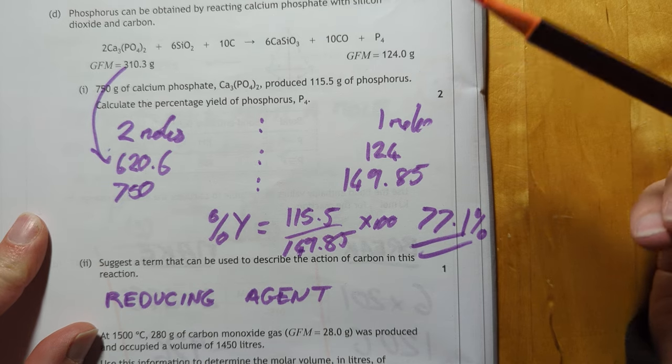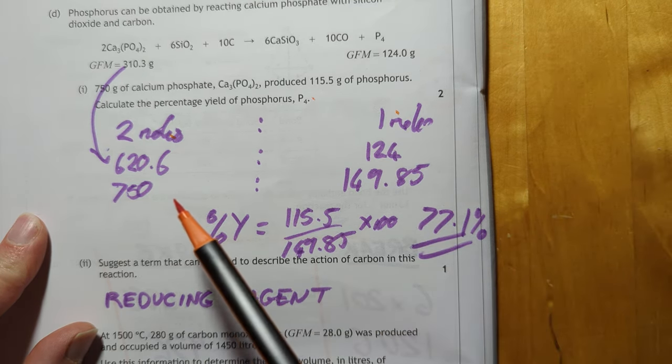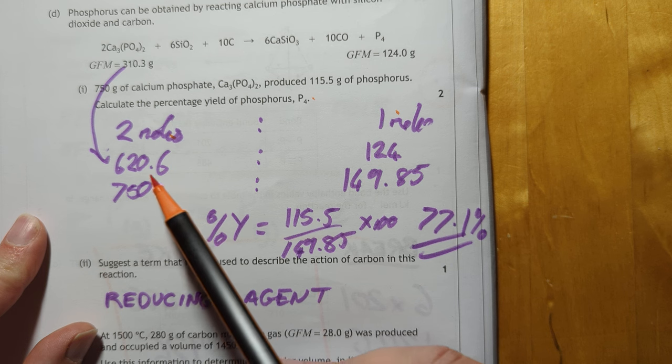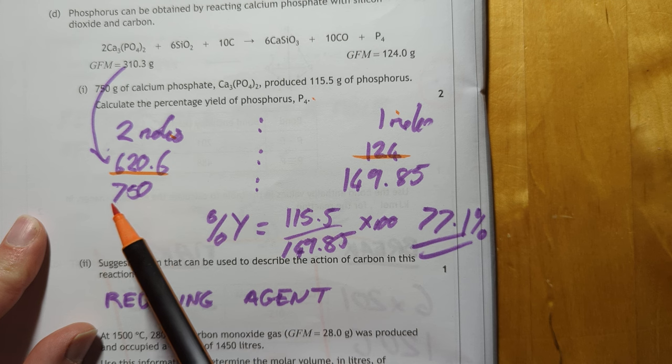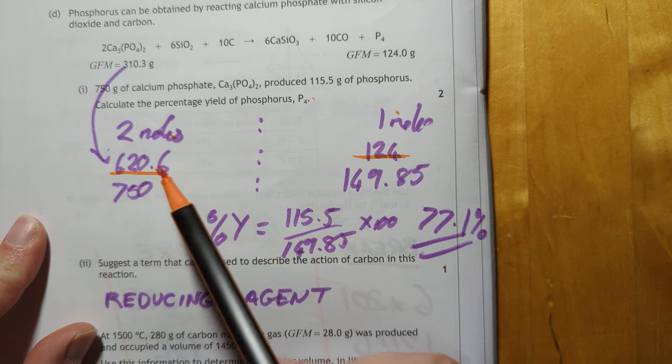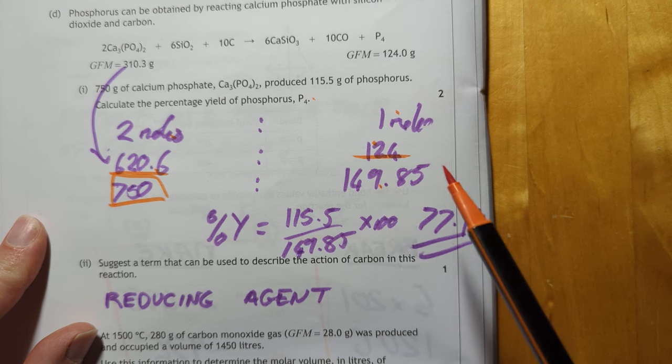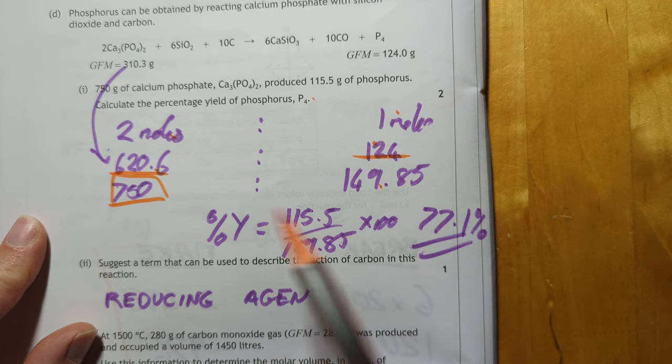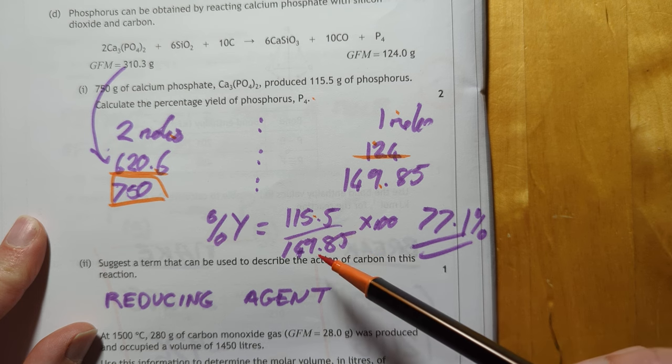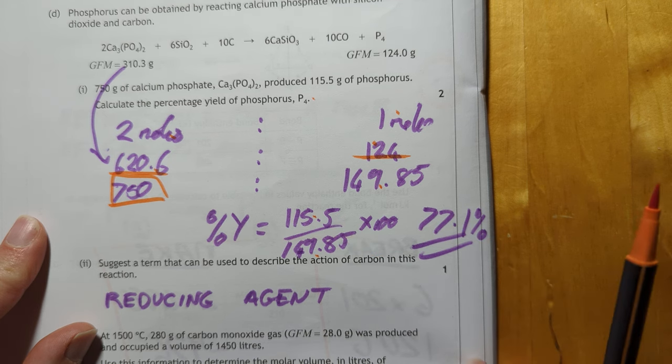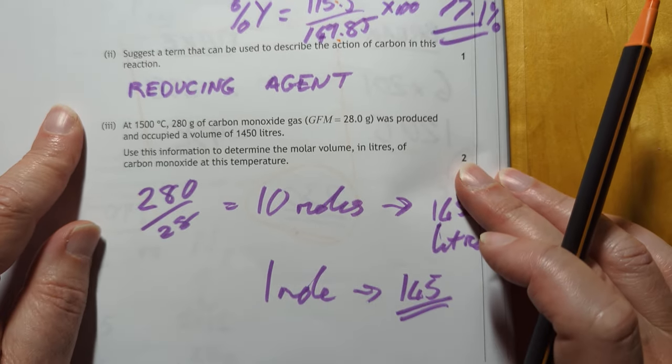Here we have a calculation on the percentage yield. It's a two to one ratio. We're starting with that number of grams. That number of grams would make that number of grams. We have this number of grams. Therefore, you're going to make that number of grams. You can do it by moles, of course, as well. Percentage yield is how much you actually got over how much you should have got times 100. I got 77%.